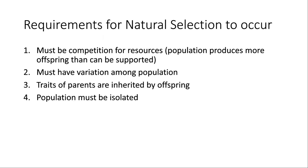Second, there must be variation among the population — some sort of difference. If it's a homogenous community where everything is exactly the same, there are no differences to be selected in the first place. If a mutation occurs, we're no longer homogenous and natural selection becomes possible. But if everything's the same, there's nothing for nature to preferentially select.